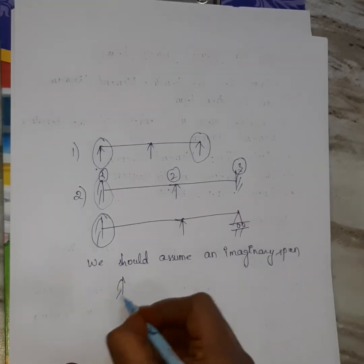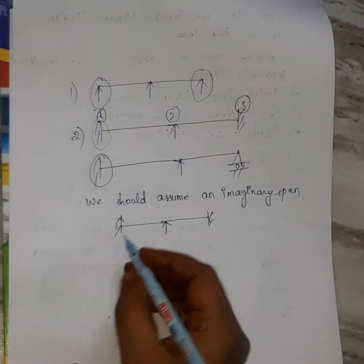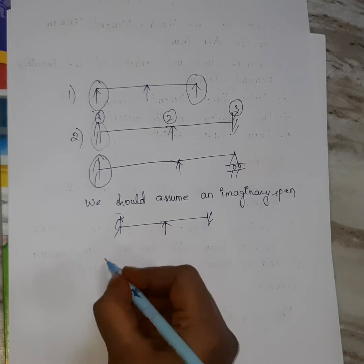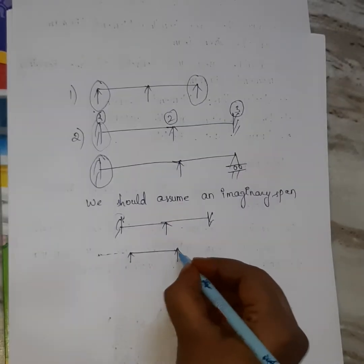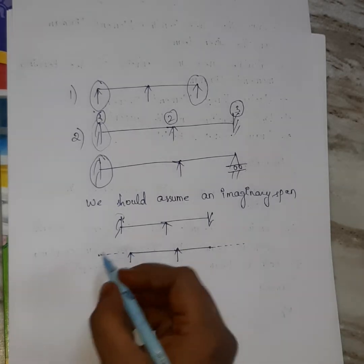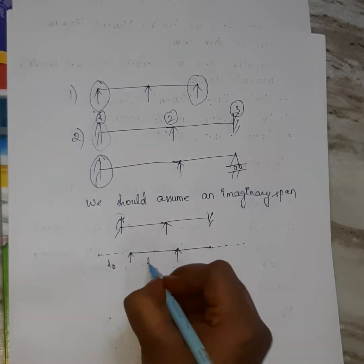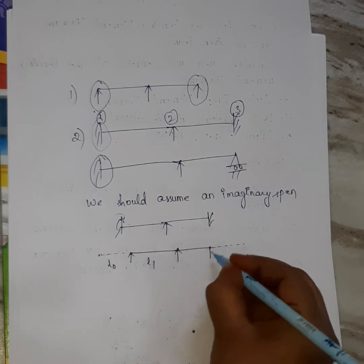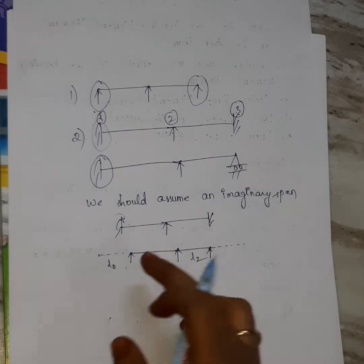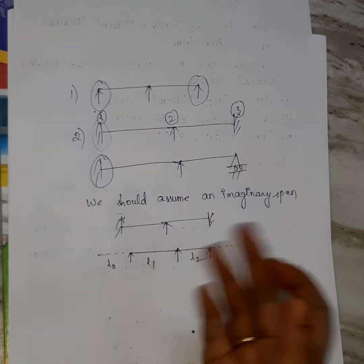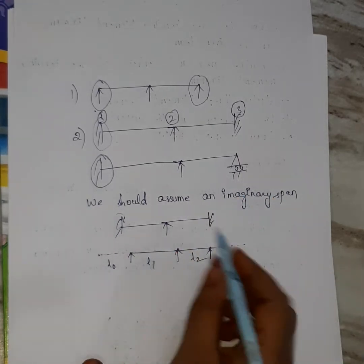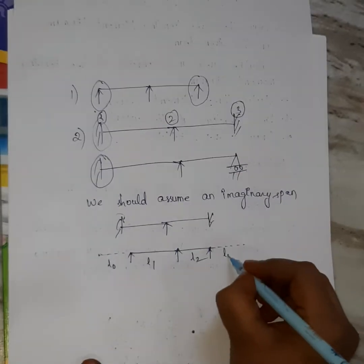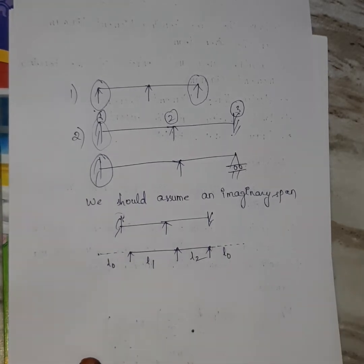For this beam, we can select an imaginary span at the fixed support. We assume an imaginary span — L0, L1, L2 — which means whether the left side is fixed, both ends are fixed, or the right side is fixed, we can assume the imaginary span and calculate the moments.